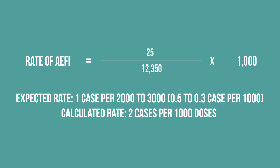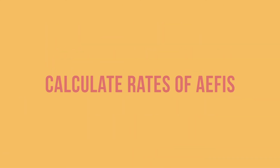Compare this with the rate in our example, which was 2 febrile seizure cases per 1,000 doses for this district. The rate of febrile seizures in your district for the month was significantly higher than expected, so further investigation is needed. You now know how to calculate rates of AEFIs to identify potential issues in your immunization program.